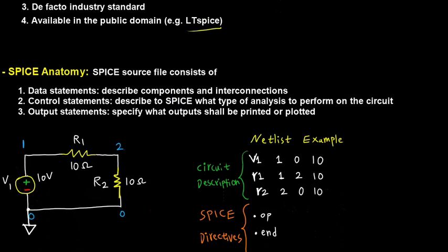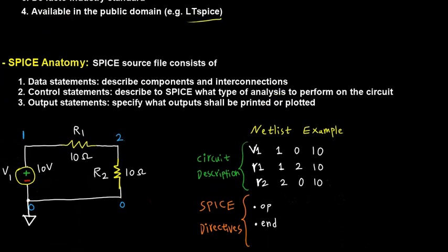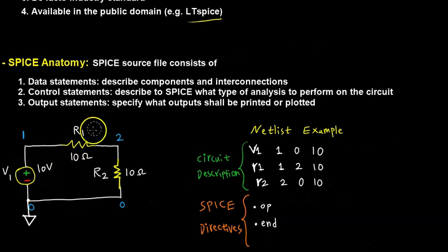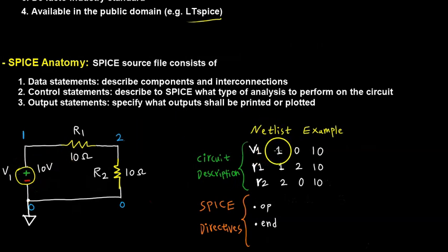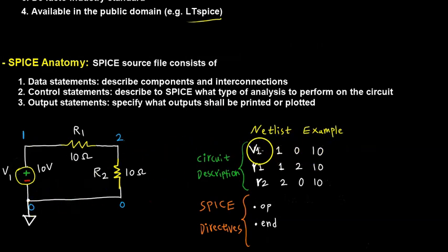Let's look at a very basic example. The netlist is the way SPICE actually does what it does. In the old days when SPICE first came out of Berkeley, you had to write down a netlist. Say we have a circuit with a voltage source, two resistors, and a bunch of nodes. You'd first specify where the ground node is. Then you start with the circuit description: the voltage source V1, going from the positive higher node to the lower node. So node one has the higher potential, then node zero, then the value — in this case, 10 volts.